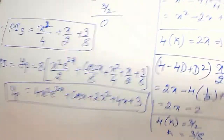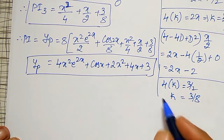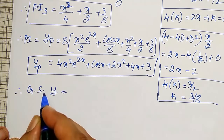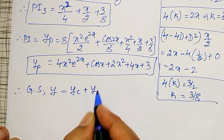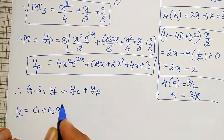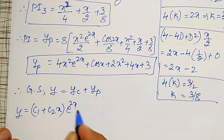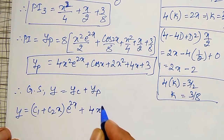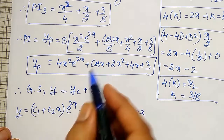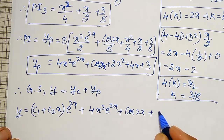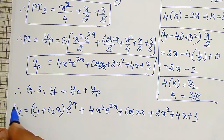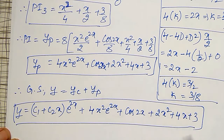Then, the general solution or complete solution is given by: Y equals YC plus YP. My YC is (C1 plus C2·x) · e to the power 2x, plus YP which is 4x squared · e to the power 2x plus cos 2x plus 2x squared plus 4x plus 3. This is the required complete solution or general solution.